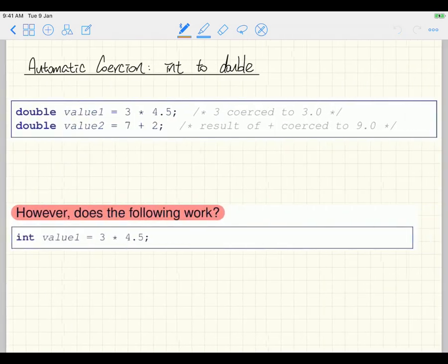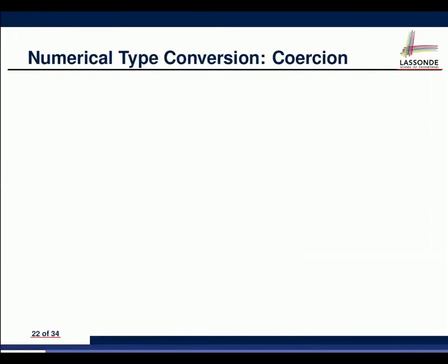Let me go over some slides and talk about two subjects which some of you encountered when doing this week's exercise. It's really about when you try to assign an integer to a double variable, versus when you try to assign a double value to an integer variable. You have to distinguish between these two scenarios.